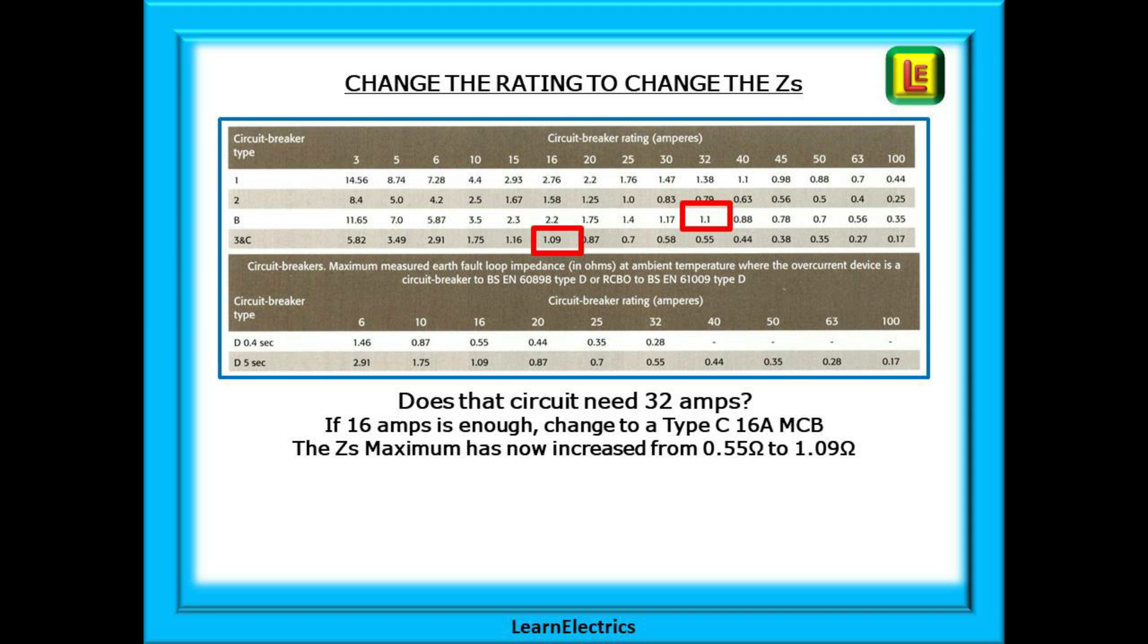Look at the charts shown. A C16 MCB has a maximum ZS of 1.09 ohms and our actual ZS of 1.07 ohms is lower than this and is an acceptable reading. So we cannot move the machinery to make the circuit shorter and we cannot rewire in larger cable. Our solution then is to change the original B32 MCB for a C16 MCB and all is well again.